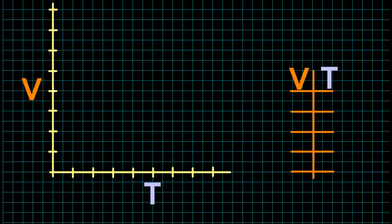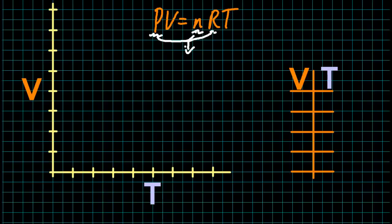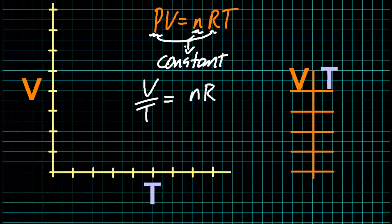Volume versus temperature of a gas is much the same. That's directly proportional. So PV, again, is nRT. So I'm going to assume the pressure this time is constant, as well as the number of moles and the gas constant. So V over T is going to give me nR over P, and that's going to be a constant again.